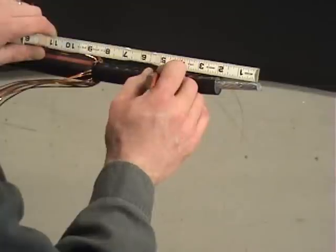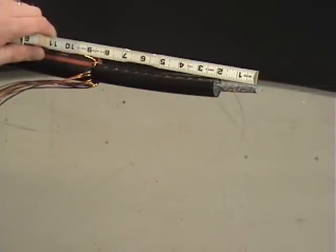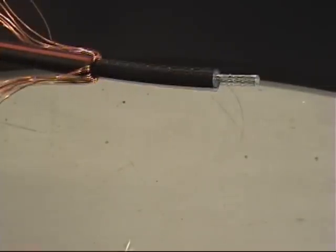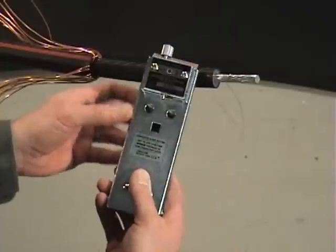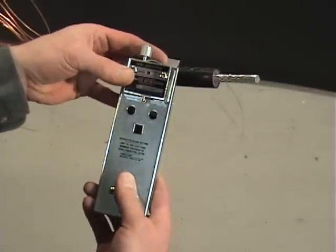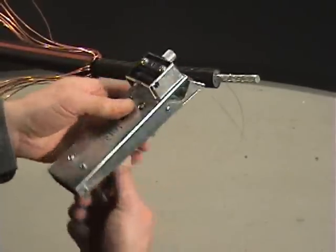Measure and mark the Semi-Con strip back according to the manufacturer's instructions. Set the Semi-Con scorer blade depth to cut through most of the Semi-Con layer without cutting completely through to the insulation.